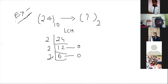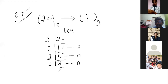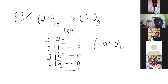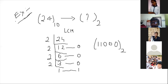Continuing: 2 divides 12 giving 6, remainder 0. Then 2 divides 6 giving 3, remainder 0. Then 2 divides 3 giving 1, remainder 1. Then we have 1 remaining. Reading the remainders from bottom to top gives us 1, 1, 0, 0, 0. So the binary number of 24 is 11000.